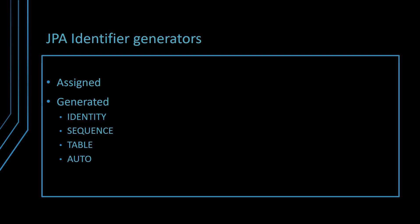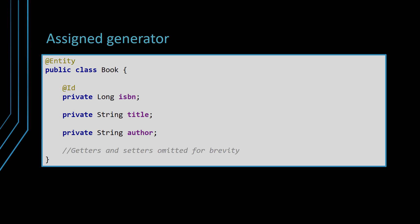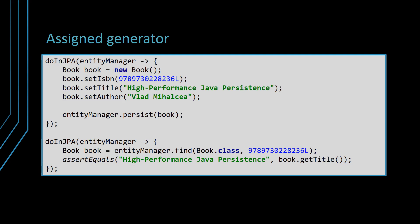The assigned identifier lacks the generated value annotation, so the user must supply a unique value whenever a new entity is to be persisted. In this case, we can use the book ISBN number as an identifier, since it's both unique and immutable. The ISBN number must be supplied by the application developer when persisting the entity, as well as when fetching the entity.